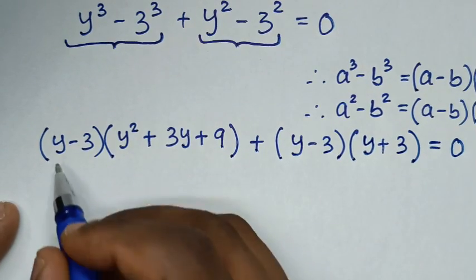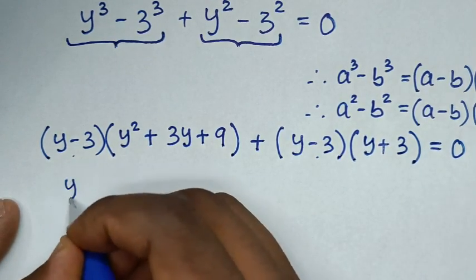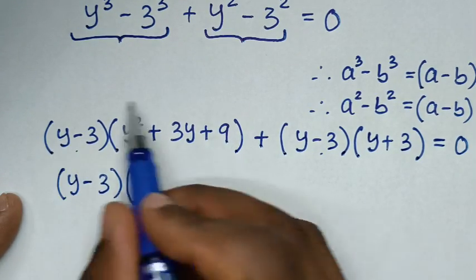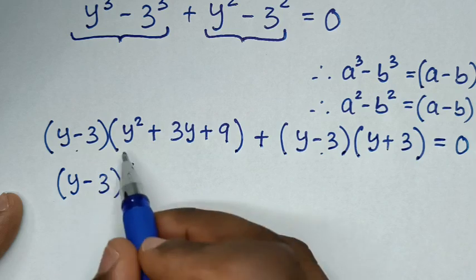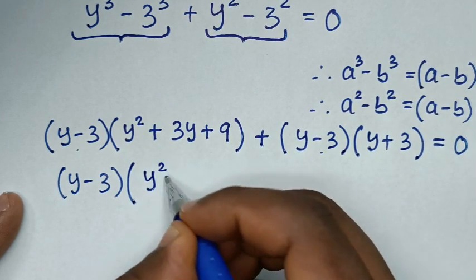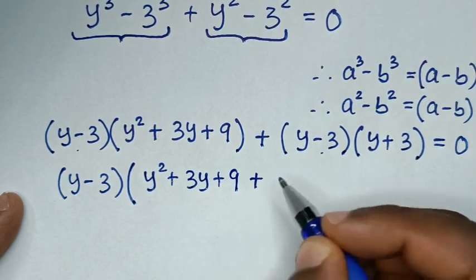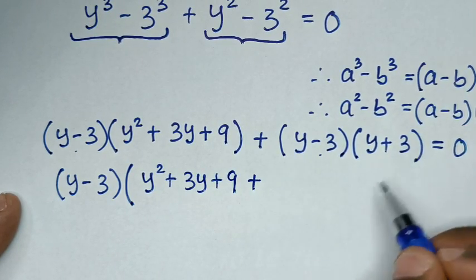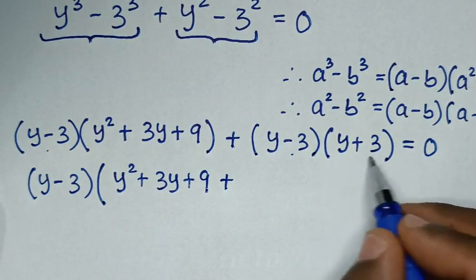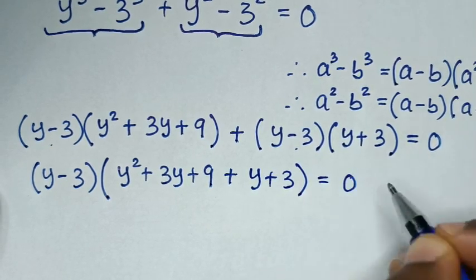Then in the next step, (y − 3) is common, so we take (y − 3) out as a factor. Dividing each part by (y − 3) gives the quadratic expression y² + 3y + 9 from the first part, and (y + 3) from the second part, equal to 0.